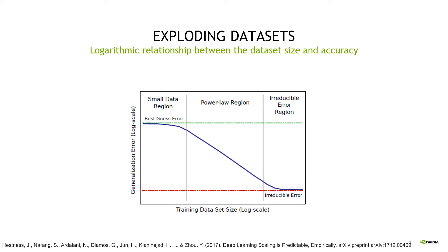From a lot of empirical studies, we found that using more training data improves generalization. This was confirmed by a publication from Baidu in 2017. This graph ranges from the best guess error to the final irreducible error and allows us to pick the number of examples needed to reach a desired generalization error. Be careful — in the middle it is actually a log-log scale. If you want more accuracy, you need to train with an exponentially growing number of examples.